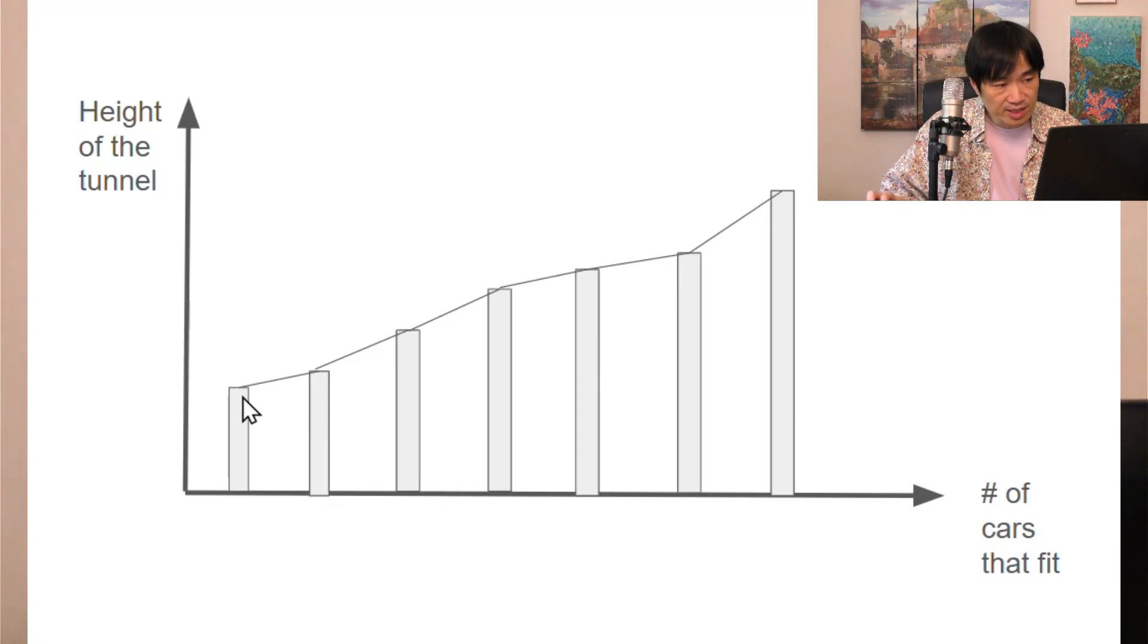That curve exactly portrays the relationship between the height of the tunnel and the number of cars that can fit in. When the tunnel is this high, only one car can pass. When the tunnel is this high, two cars can pass. And when the tunnel is this high, all the seven cars can pass.